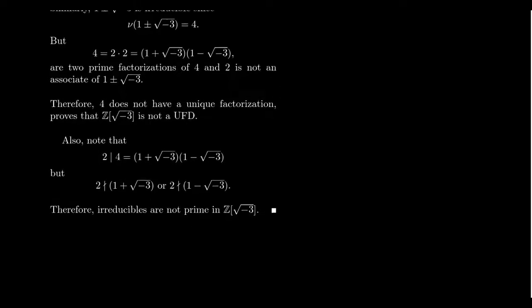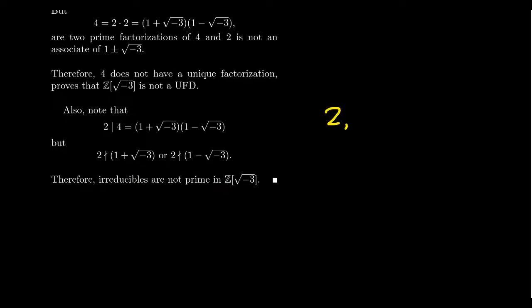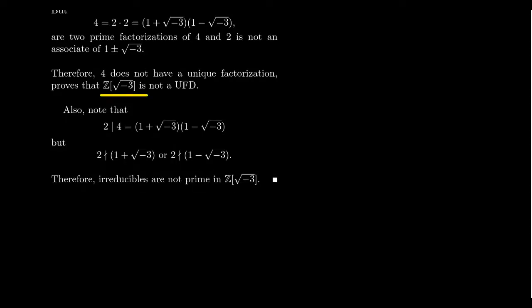Let's confirm this. The only units in this ring are ±1, so the only associates of 2 are 2 and −2. But 1 + √(-3) is neither 2 nor −2, so 2 and 1 + √(-3) are not associates. Therefore, these are two genuinely different factorizations of 4 into irreducibles. Since 4 has two distinct irreducible factorizations, we conclude that ℤ[√(-3)] does not have unique factorization — it is an integral domain that is not a UFD.